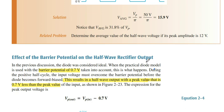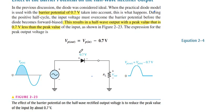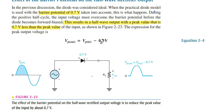Now the effect of barrier potential on the half wave rectifier's output: the diode always has a barrier potential equal to 0.7 volts, as discussed in the previous lecture about diodes. So when we give Vin, the peak value of input voltage — the output voltage is always less by 0.7 volts, which is subtracted from Vp_in.